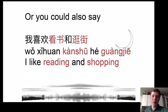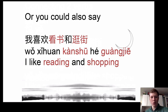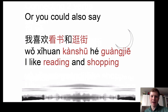There's another way we could also say this: we can treat 看书 and 逛街 as nouns, in which case we can connect them using 和. So we can say 我喜欢看书和逛街. In this situation, 看书和逛街 are behaving like nouns, so using 和 to connect them is acceptable.